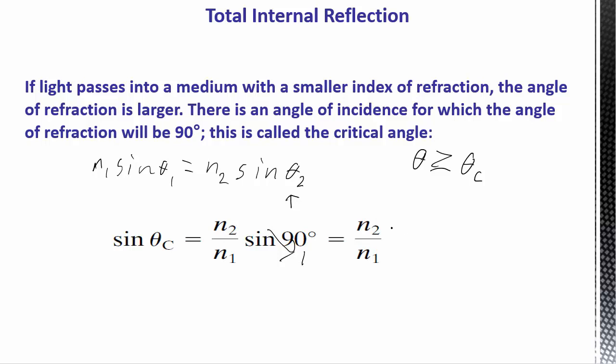So you just end up with the sine of the critical angle is equal to the ratio of the indices of refraction. And this, again, it only happens when you're going from higher index of refraction to lower index of refraction. And if you solve this for theta, you're just going to get arc sine of the ratio of the indices of refraction. And this is going to be the higher one here, right, because that's what we started with. And this is going to be our lower index of refraction.